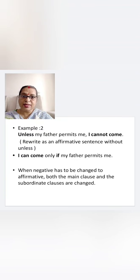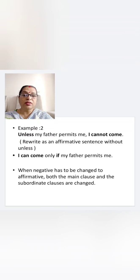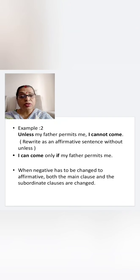Unless my father permits me, I cannot come. Rewrite as an affirmative sentence without 'unless': 'I can come only if my father permits me.' The change is: 'cannot come' becomes 'can come', and in place of 'unless' you write 'if'. When negative has to be changed to affirmative, both the main clause and the subordinate clause are changed.